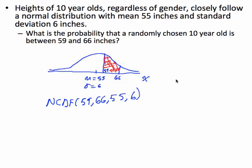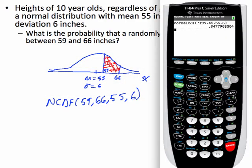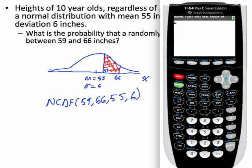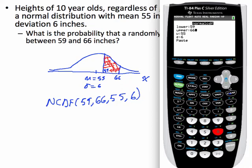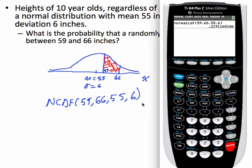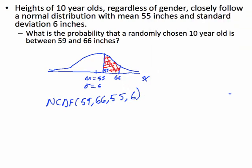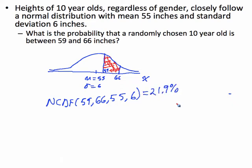Let's put that in the calculator. We'll go to second distribution, number two for normalCDF. Lower endpoint is 59, upper endpoint is 66, mean is 55, standard deviation is 6. Paste that command to the home screen and run it — it looks like about 21.9% of the kids are in that interval, between 59 and 66 inches.